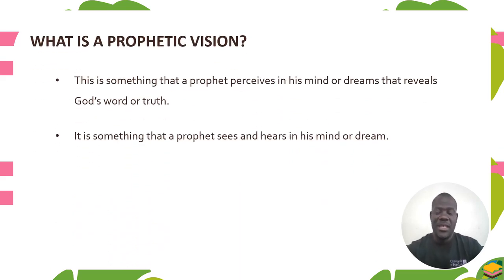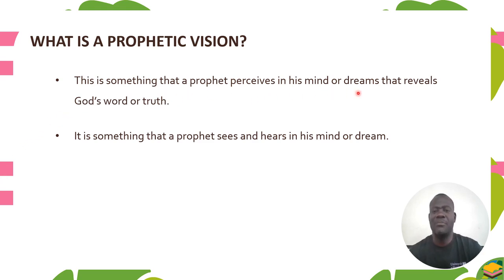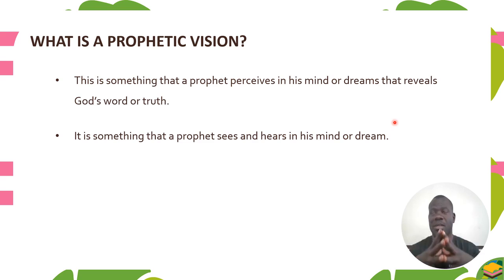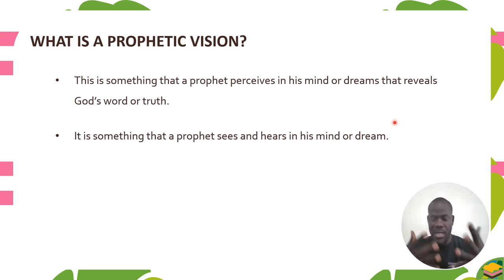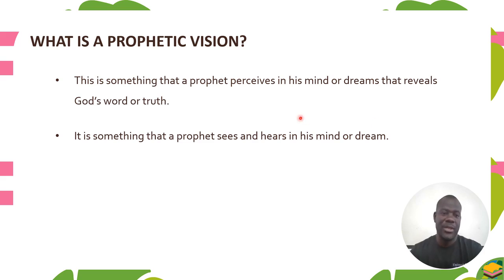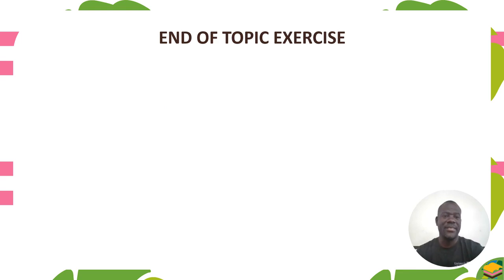Another term we will find in the book is the prophetic vision. A prophetic vision is something that a prophet perceives in his mind or dreams that reveals God's word or truth. It doesn't mean something physically present in reality — these are things that come to the prophet's mind or into his dreams, which are interpreted as the revelation of God. It is about the mind or the dream, not things that come in the physical world.